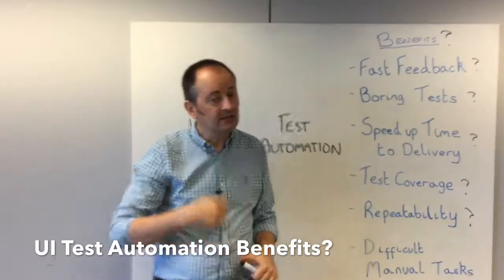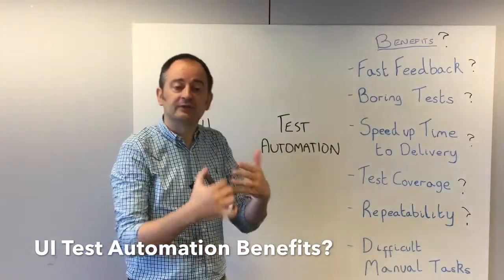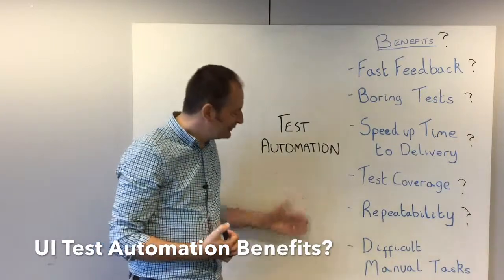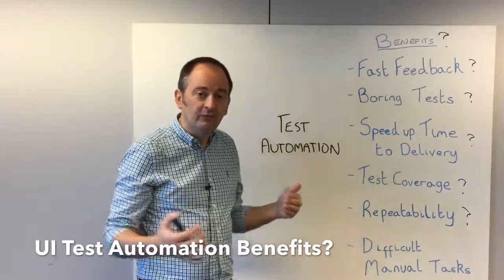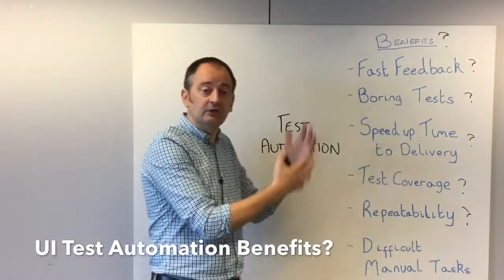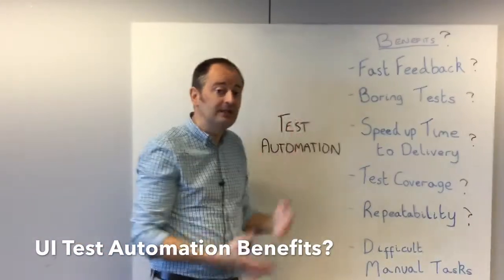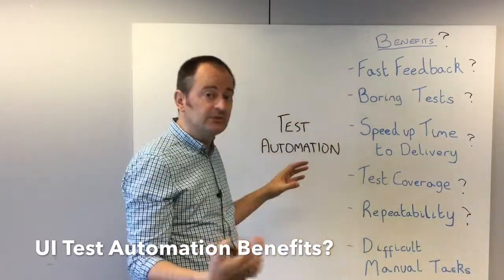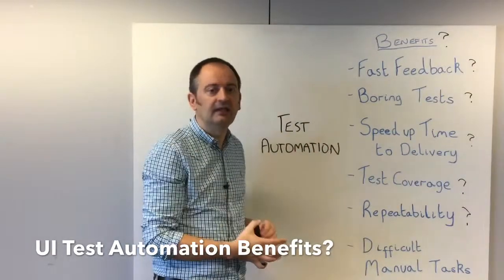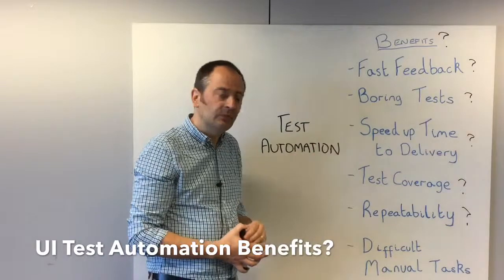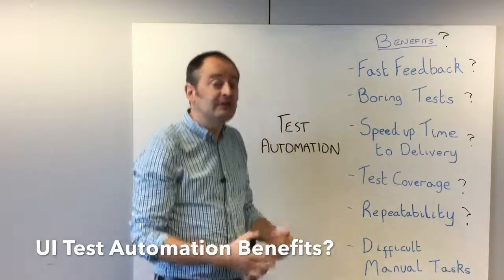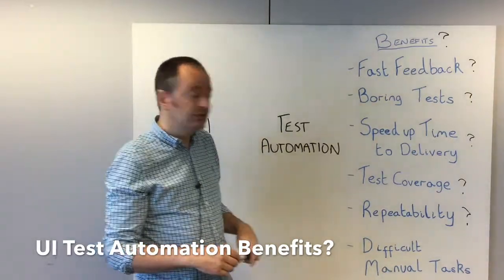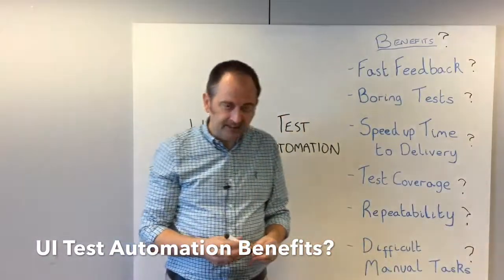For difficult manual tests like performance testing, there are still benefits to automation. However, we often want to do performance testing via the service layer rather than via the user interface, because the UI adds extra complications that may not give us clean performance results — they may introduce functional issues instead. So although we could automate some UI activities that would be difficult manually, we may be able to avoid them completely by doing those tests another way.